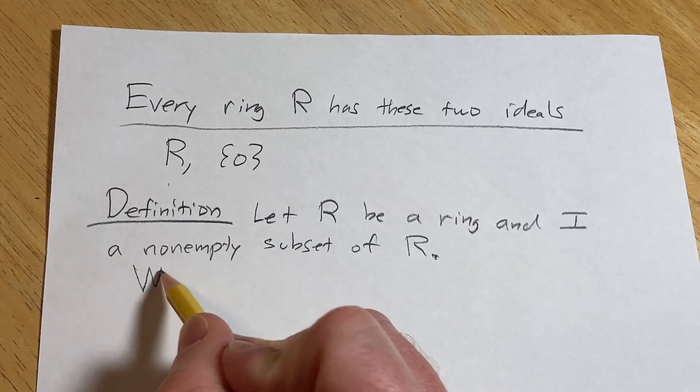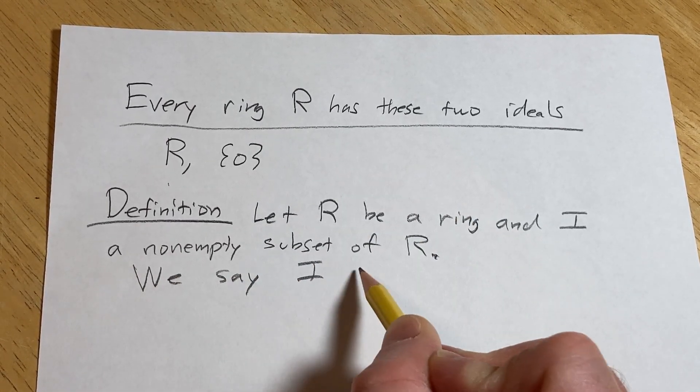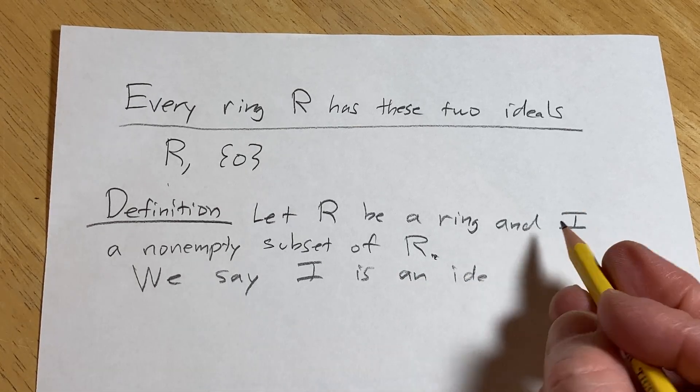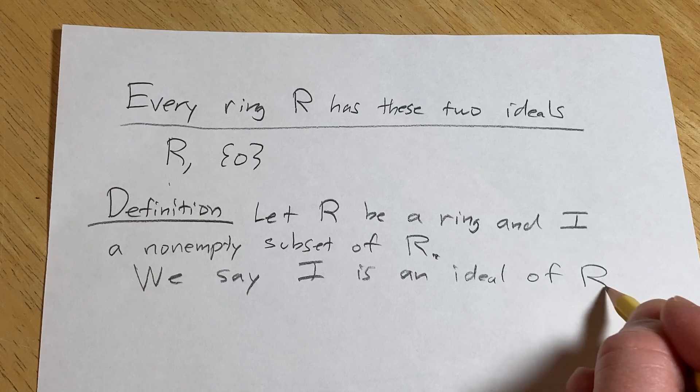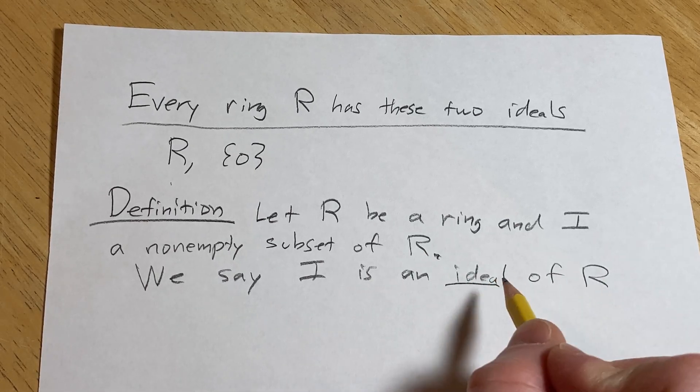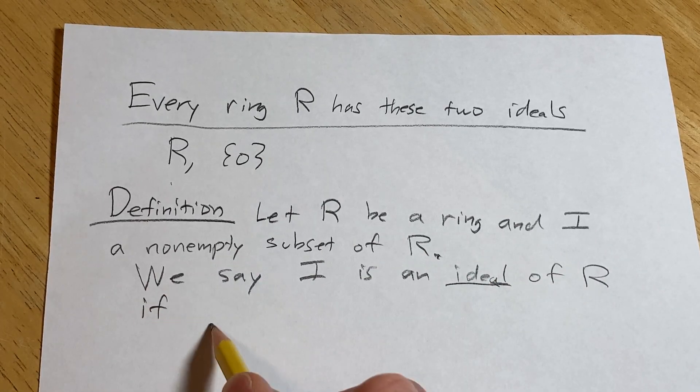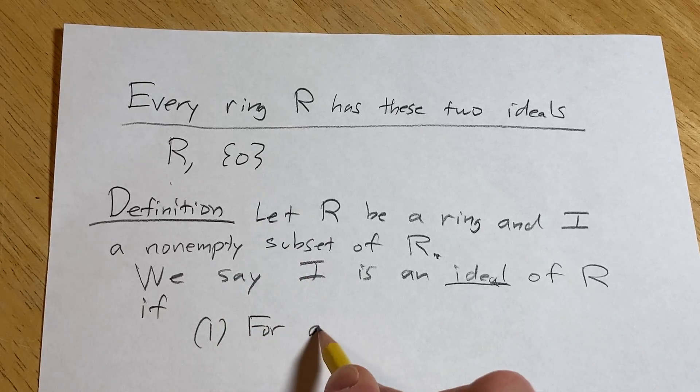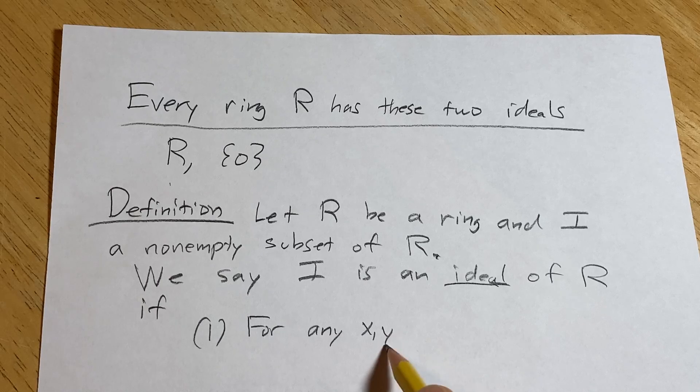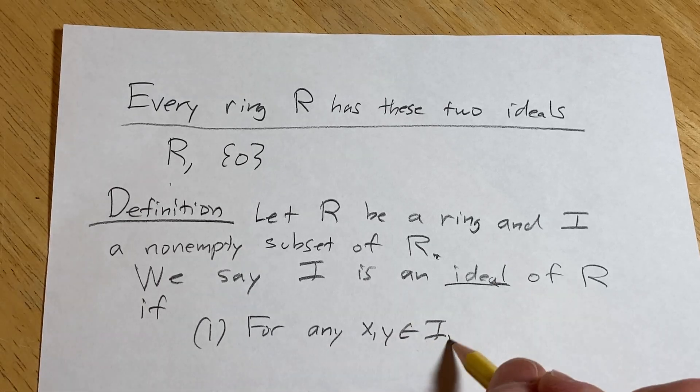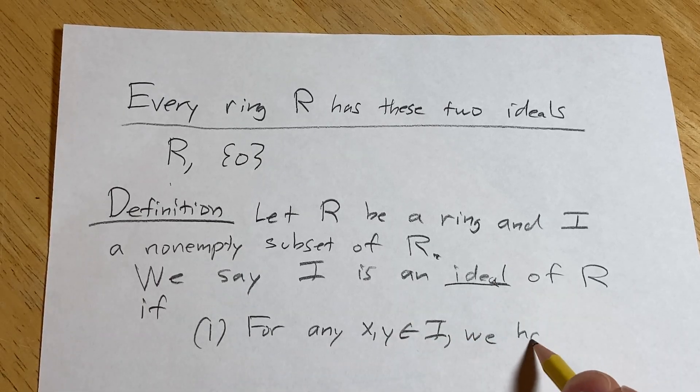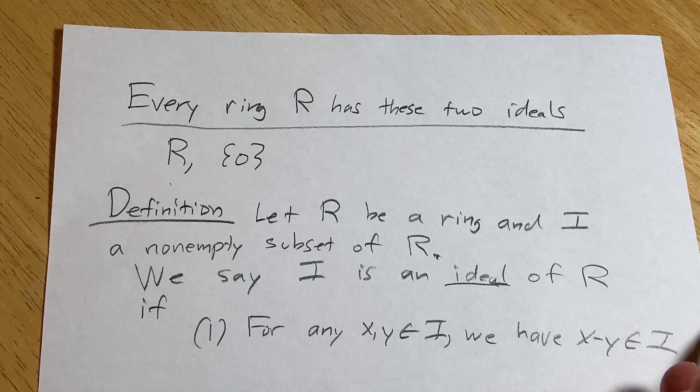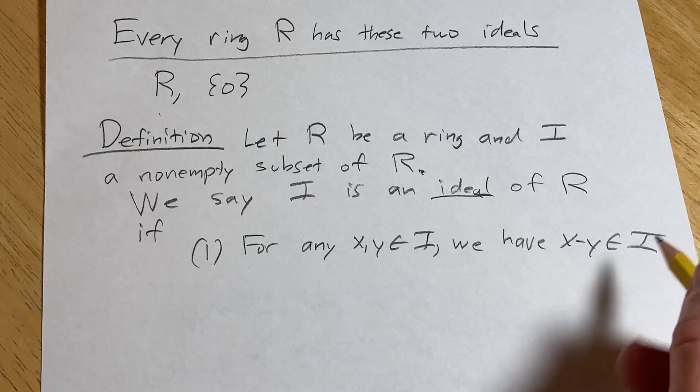We say I is an ideal of R if, well, the first condition is that for any x, y in I, we have that x minus y is also in I. So the difference is going to be in I. You take any two elements in the ideal, the difference is there.